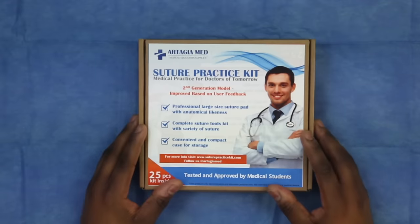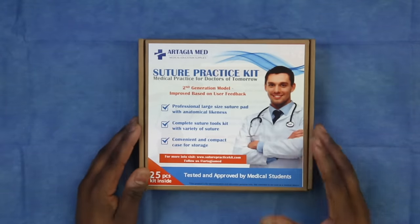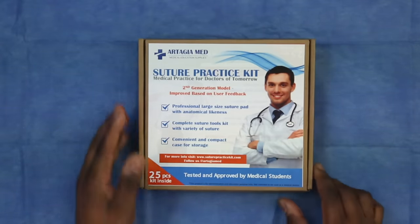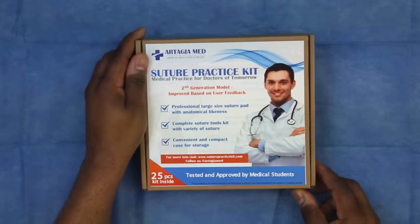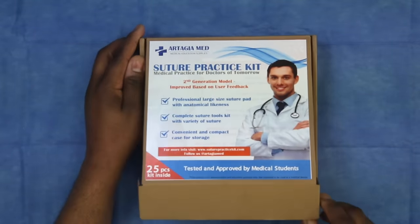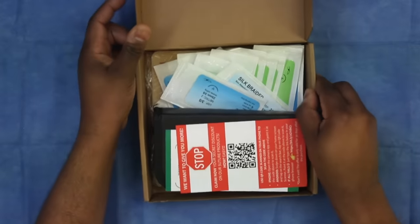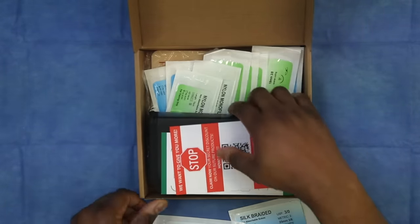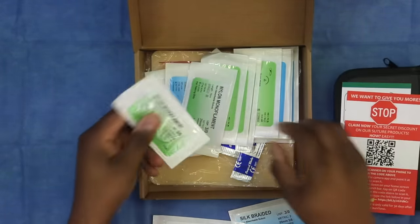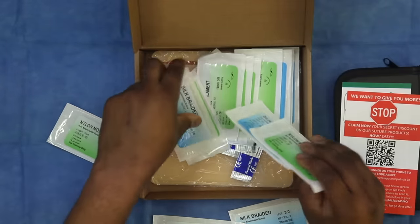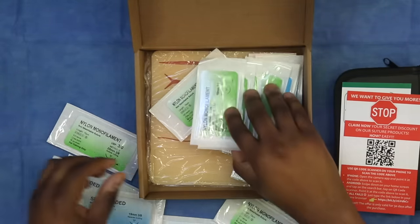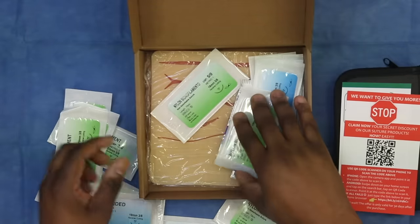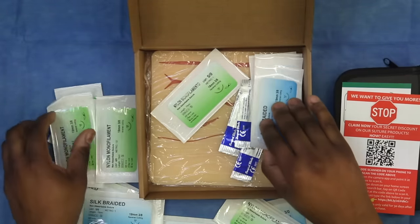This suture practice kit here is something that comes together in a really convenient box. There's 25 pieces on the inside of this and there are multiple different types of sutures. There's a nylon, there's a silk, and these are all the types of sutures that we use in the hospital, in surgery, or in the emergency room.